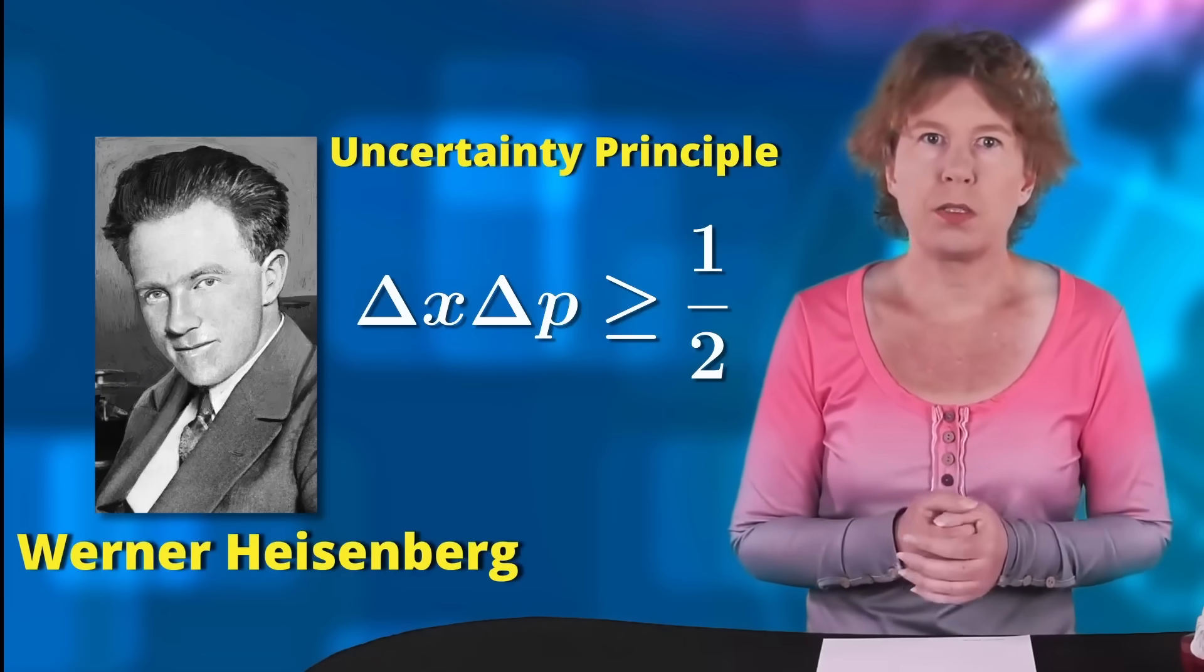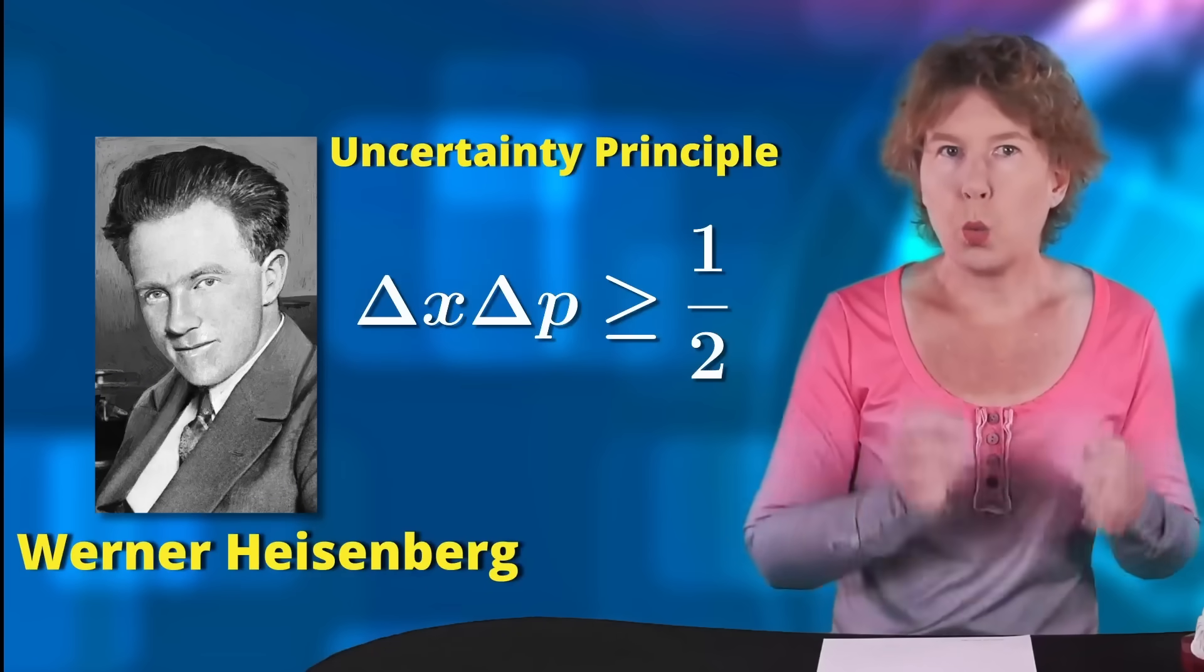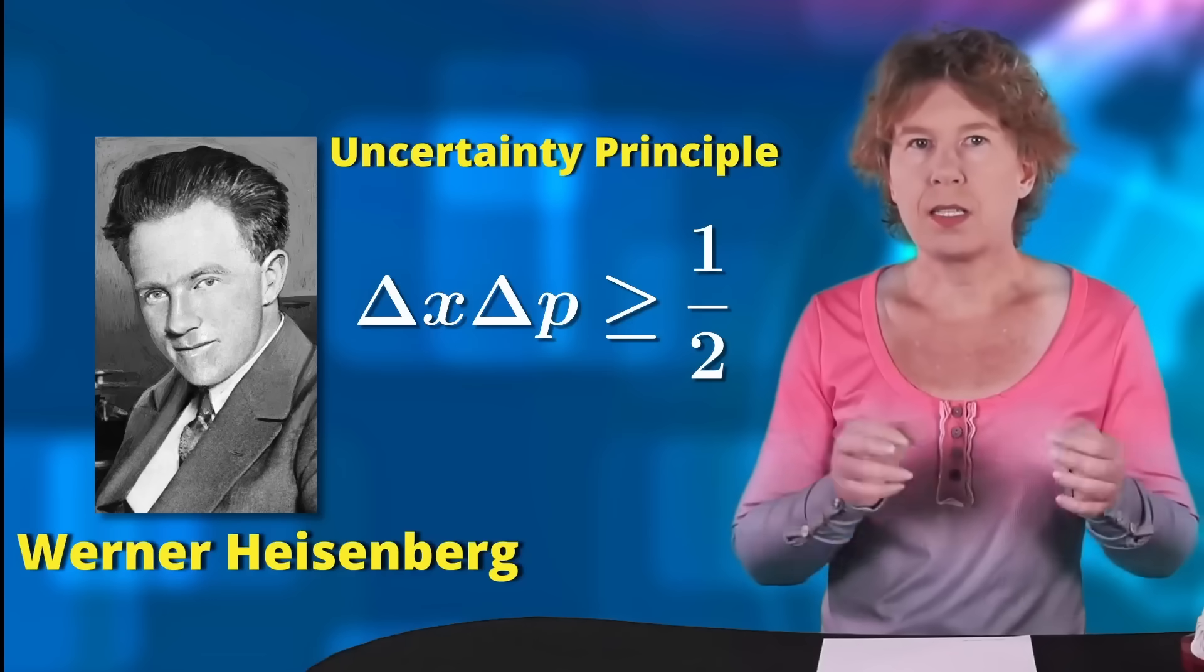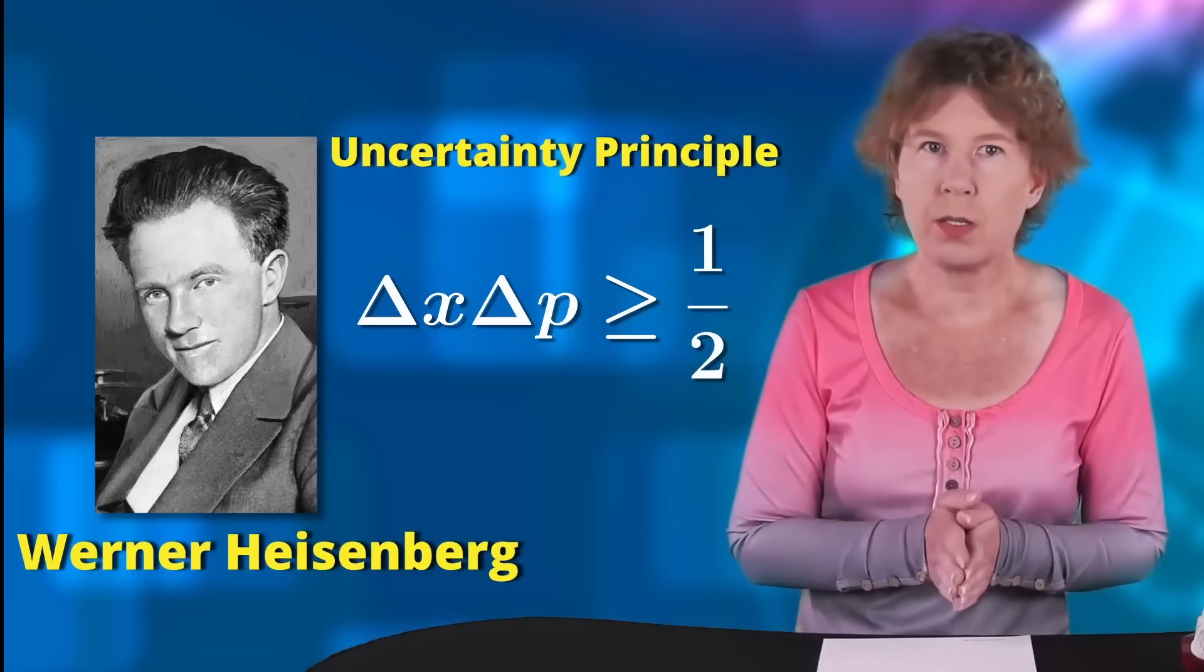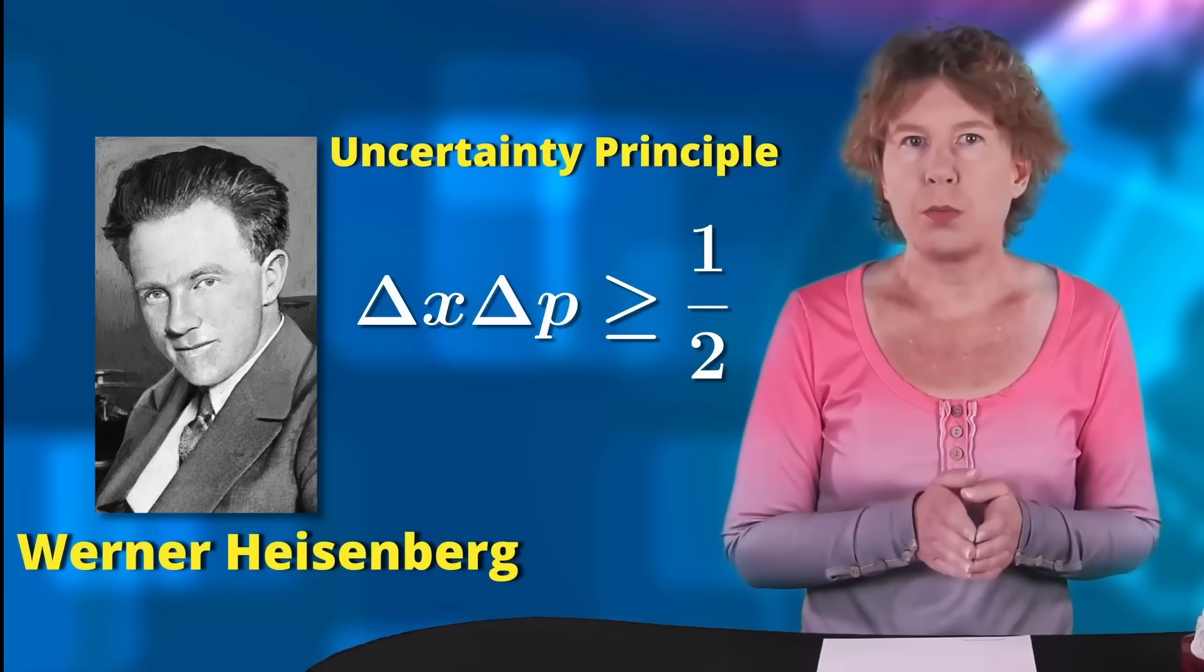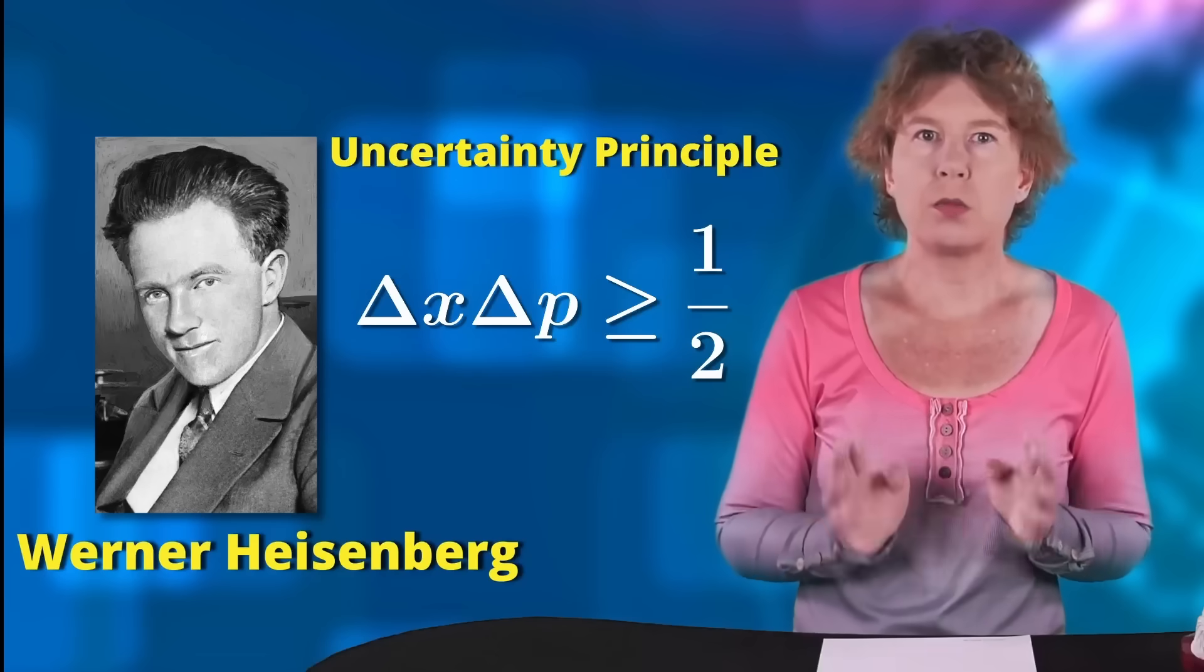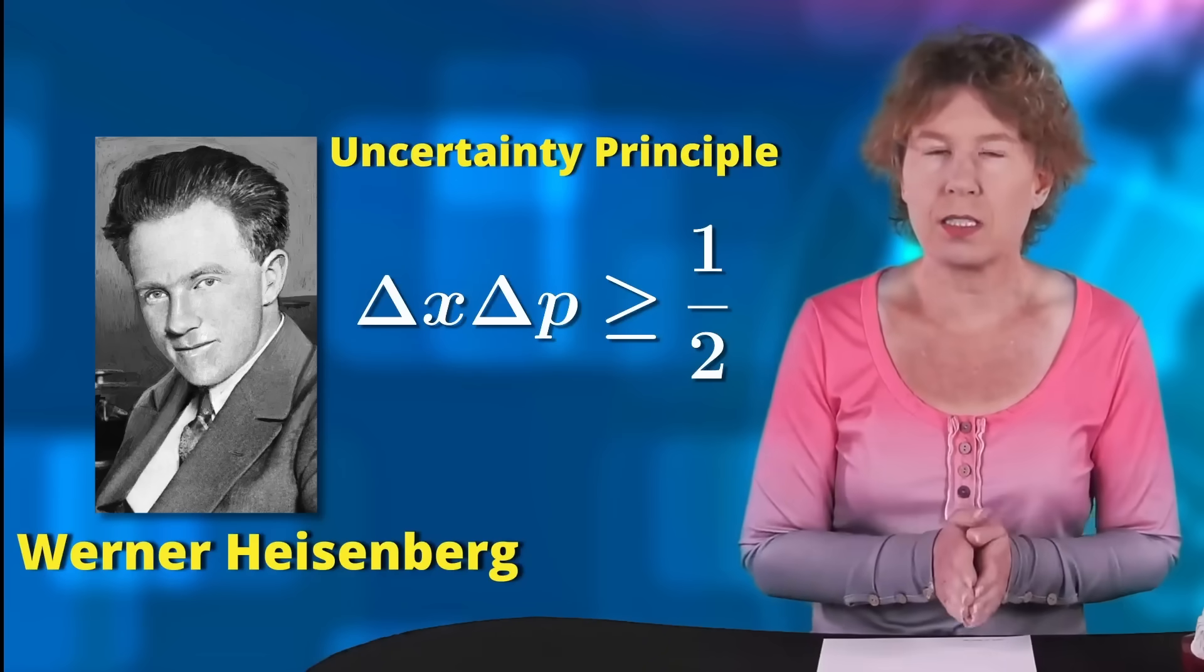The second thing you need to know is Heisenberg's uncertainty principle. The better you know where a particle is, the less you know where it's going. This means that the probability cloud of a particle will generally run apart if you don't look at it.